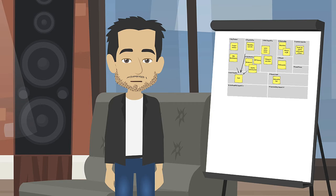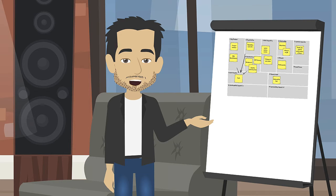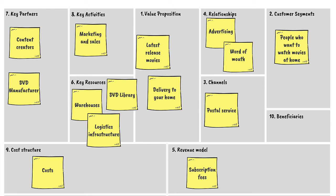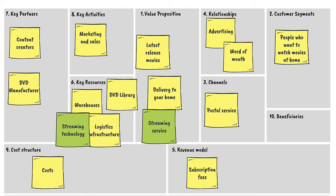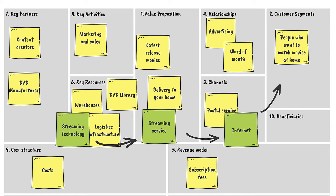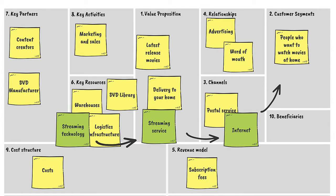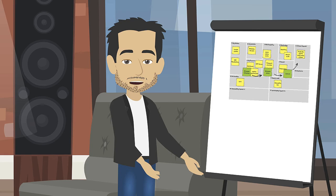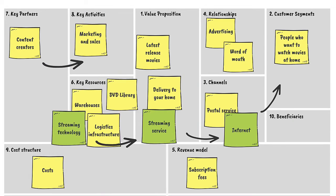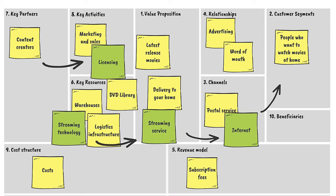Netflix then moved to virtualize their value proposition by changing their business model from shipping a physical product to people's homes and instead offering a streaming service via the internet. They created a streaming technology and platform and a new channel to deliver the value proposition to their customers via the internet. Their revenue model stayed broadly the same, but of course they no longer needed the DVD manufacturers and instead directly licensed the movies from the production companies.